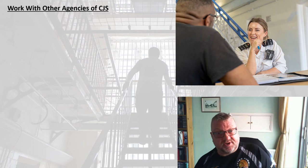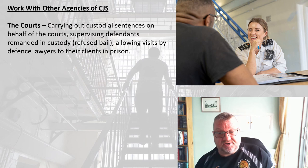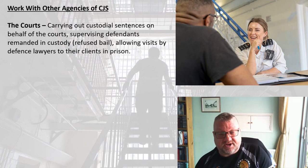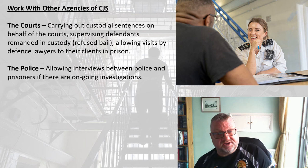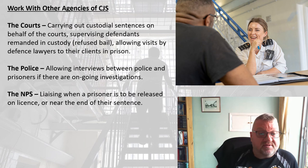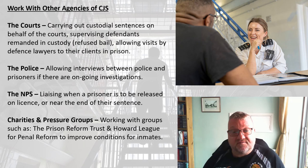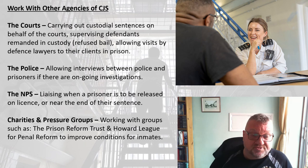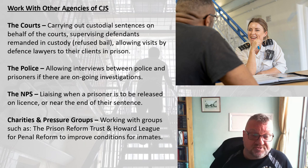Finally, the prison service liaises with other agencies of the criminal justice system. It works with the courts by carrying out custodial sentences and supervising remand defendants refused bail, allowing visits by defence lawyers. It works with the police, allowing them to interview prisoners during ongoing investigations. It liaises with the National Probation Service when a prisoner is to be released on licence. It also works with charities and pressure groups such as the Prison Reform Trust and the Howard League for Penal Reform to improve conditions for inmates.